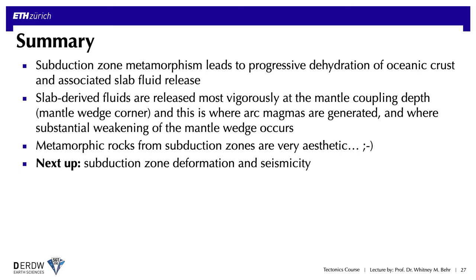To summarize: subduction zone metamorphism leads to progressive dehydration of oceanic crust, releasing slab fluids up into the mantle wedge. Those fluids are released most vigorously at the mantle coupling depth or the mantle wedge corner, and this is where arc magmas are generated and where substantial weakening of the mantle wedge occurs. Metamorphic rocks from subduction zones are very aesthetic, so I had to show you some pictures. In the next segment — the last one on the theme of subduction zones — I'll be talking about subduction zone deformation and seismicity.